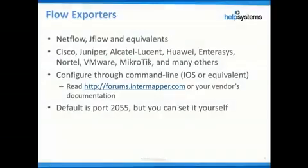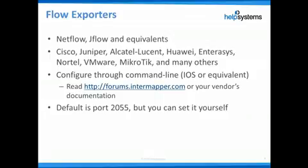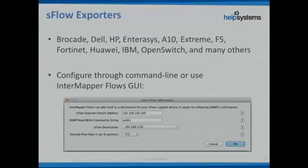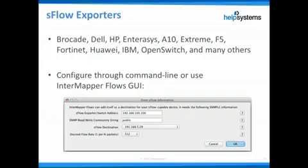There are three ways that InterMapper Flows can receive flow records. NetFlow is a protocol designed and championed by Cisco, and a number of other vendors provide compatible flow data. You need to configure your router with the destination address of the InterMapper server, the port — 2055 is the default — the interfaces to report on, and the version of NetFlow to use. NetFlow version 5 is fine; it contains the necessary information and the packets are smaller. The load caused by NetFlow and SFlow is small, generally running at 1–2% of total traffic volume. The exact commands are specific to your equipment, so check your vendor documentation or forums.